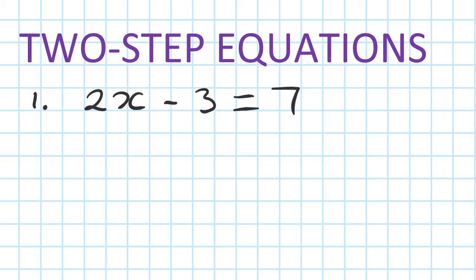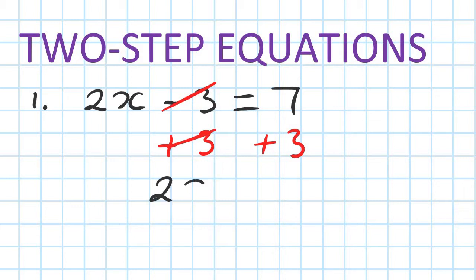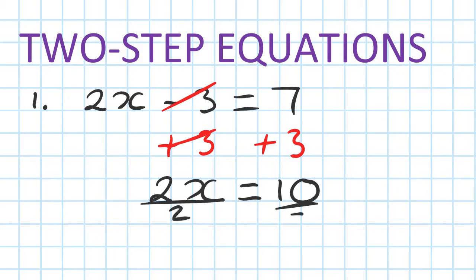Something take away 3 equals 7. We want to get rid of the 3 first, so we do the opposite. To get rid of this minus 3, I add 3 on the left, so I must add 3 on the right as well. That disappears, so 2x is equal to 10. Then I divide by 2 on both sides — that cancels out — so therefore x is equal to 5.